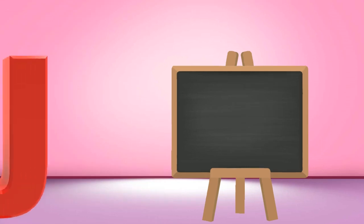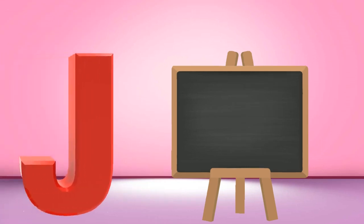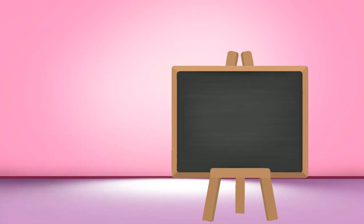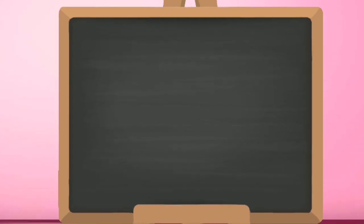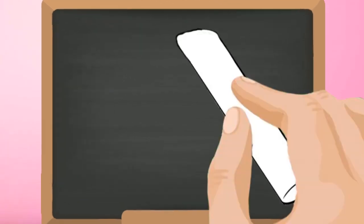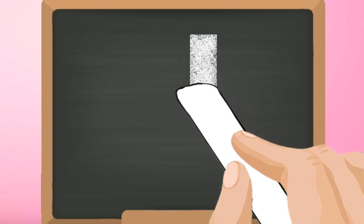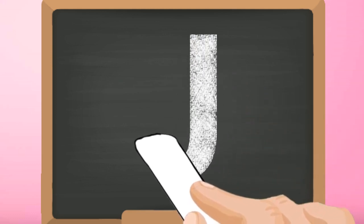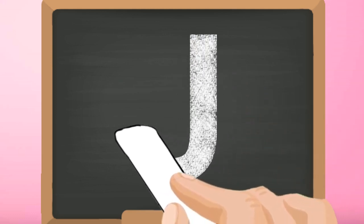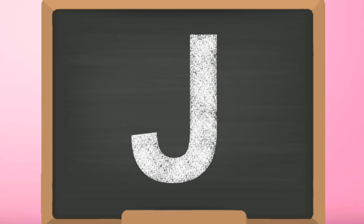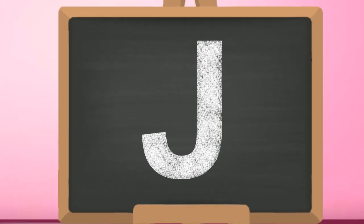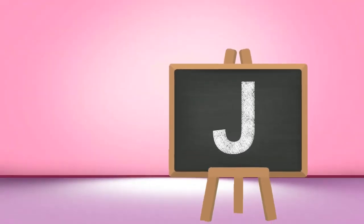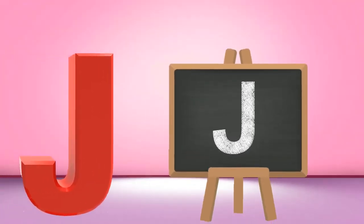J, capital J. Start from the top and draw a standing line to the bottom with a small backward curve. Capital J.